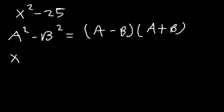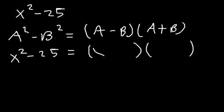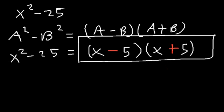So to factor x squared minus 25, take the square root of x squared, which is simply x. The square root of 25 is 5, because 5 times 5 is 25. Now one of them is going to be minus and the other will be plus. So that's how you factor x squared minus 25 — it becomes (x minus 5)(x plus 5).